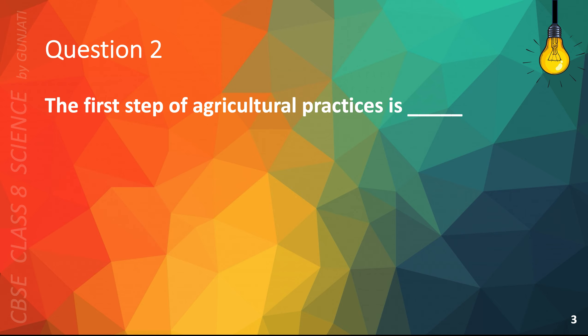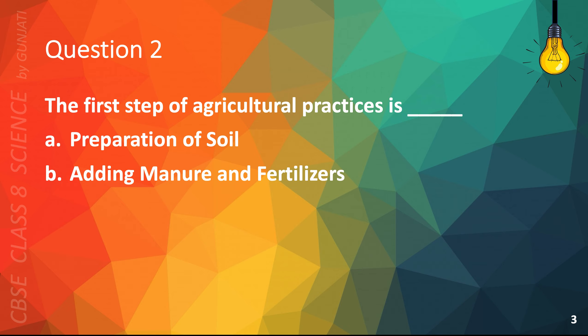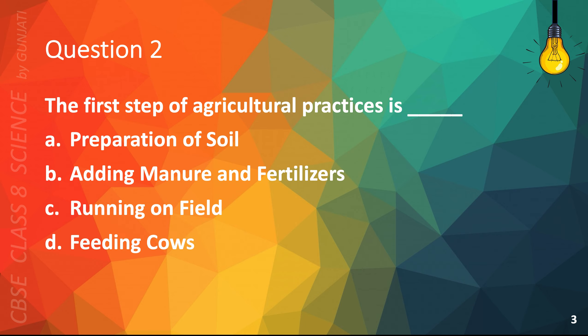Question 2. The first step of agricultural practices is: A. Preparation of soil, B. Adding manure and fertilizers, C. Running on field, or D. Feeding cows. The correct answer is A. Preparation of soil.